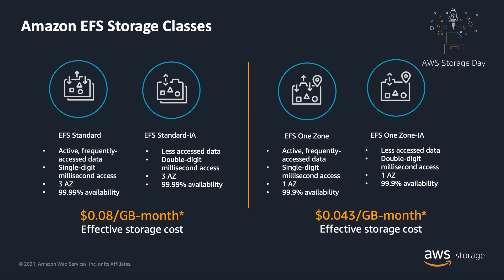Before we jump into this feature, let's discuss EFS storage classes and how they relate to the concept of frequent and infrequent access. Amazon Elastic File System offers four storage classes: two standard storage classes — Amazon EFS standard and Amazon EFS infrequent access — and two one-zone storage classes — Amazon EFS one zone and Amazon EFS one zone infrequent access. The EFS standard and EFS one zone storage classes are performance optimized to deliver lower latencies for frequently accessed files. The infrequent access storage classes are cost optimized for files that are not accessed every day. EFS storage classes are classified by multi-AZ and single-AZ resiliency, and you can only transition between storage classes in the same durability model.